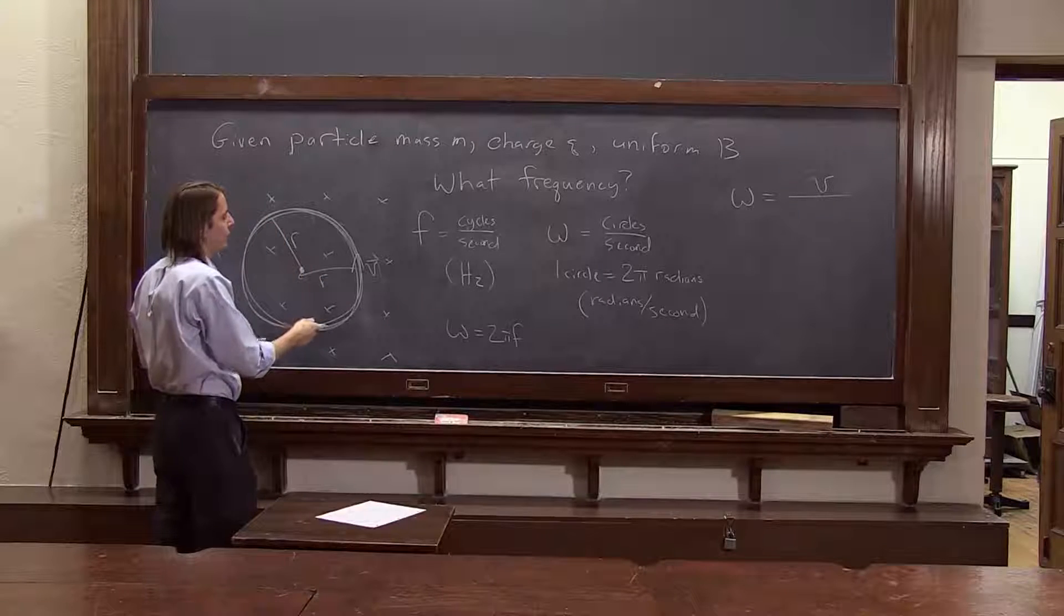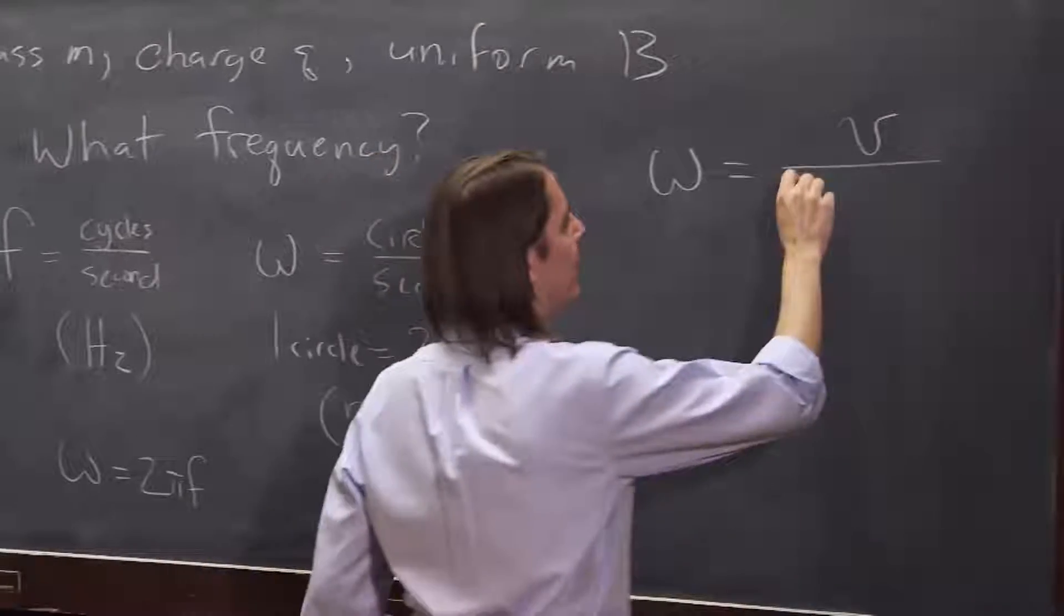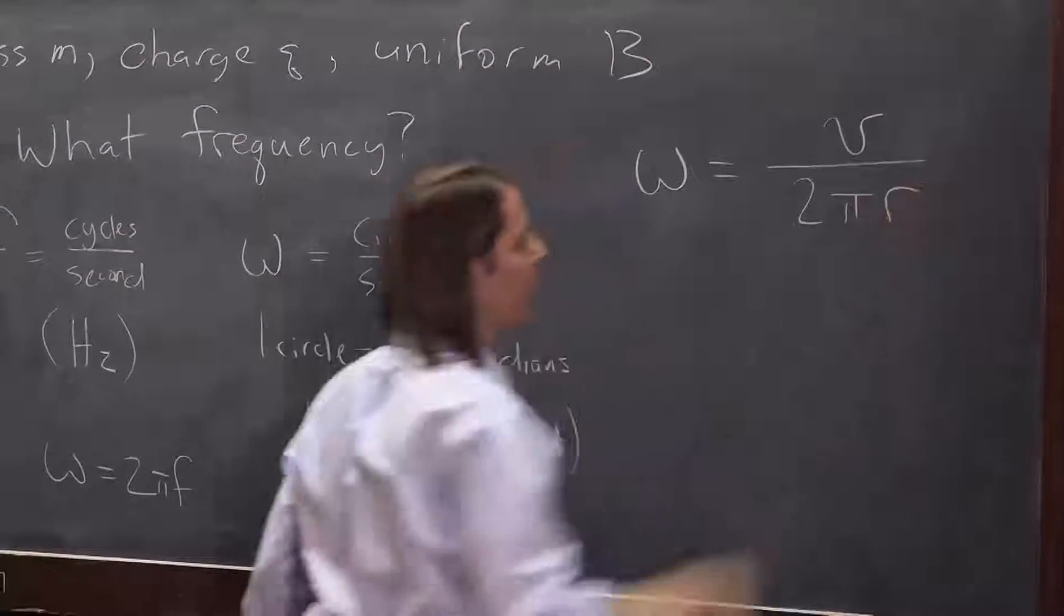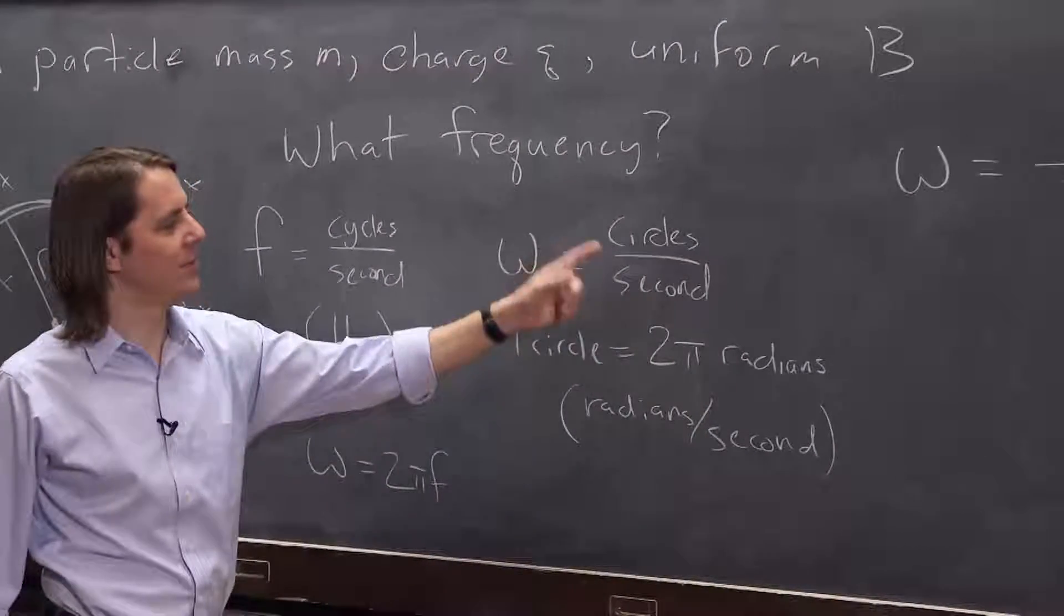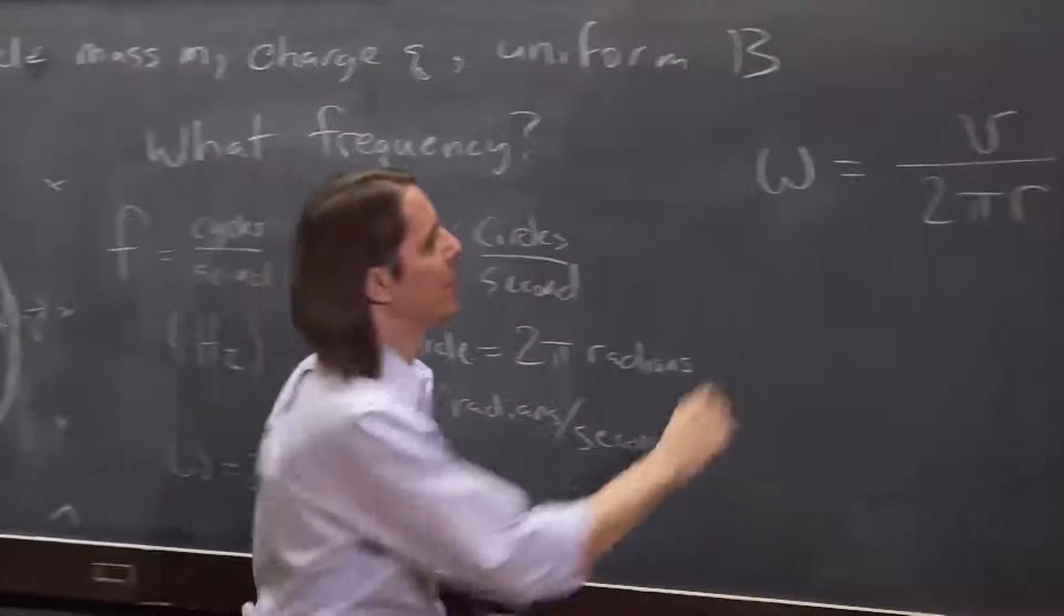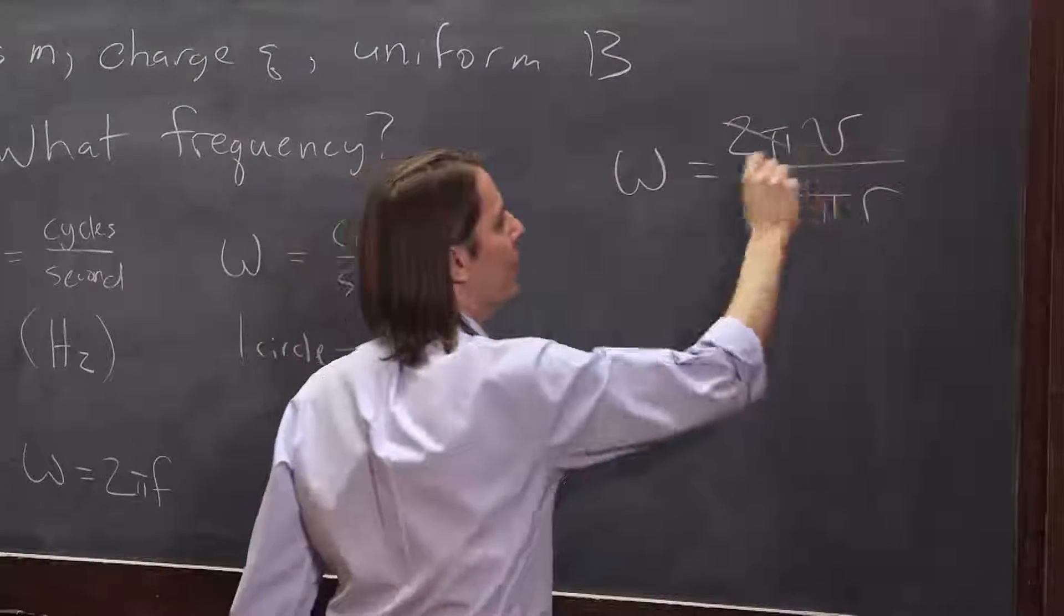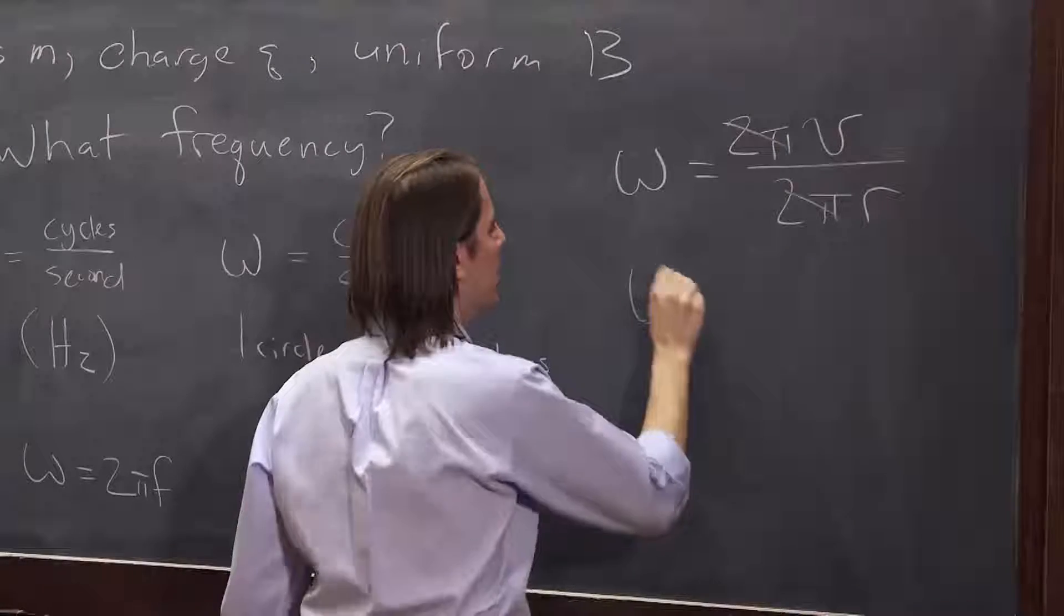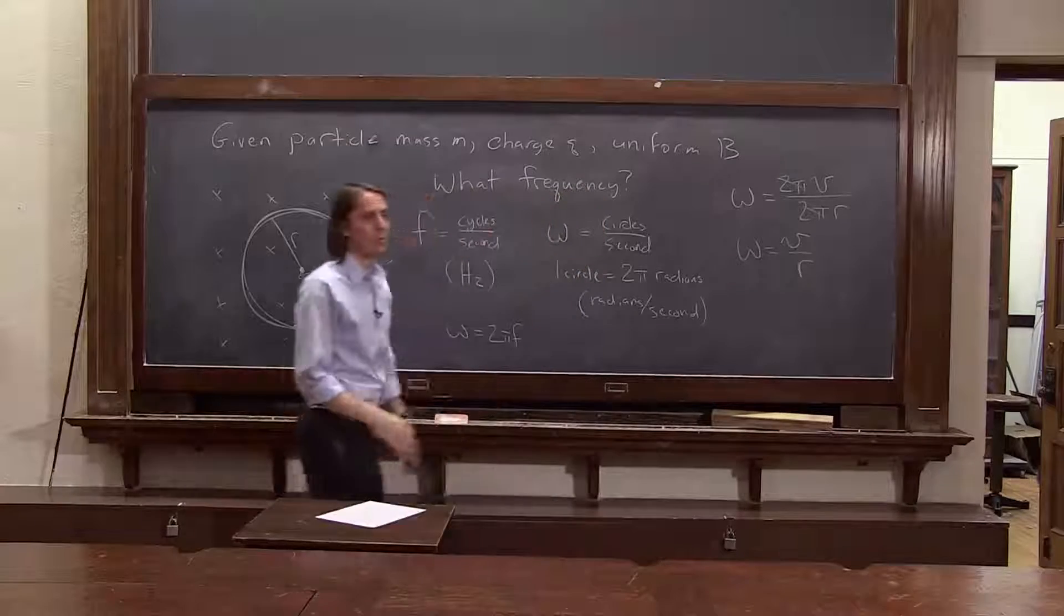If it's 10 meters per second, if the circumference is two meters, that would be five circles per second. So we're going to divide by two pi r. That's circles per second, but we actually do it in radians per second, so we need to multiply those circles by two pi. And then you can see the two pi's go away. So omega is v over r for any circular motion, actually.